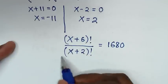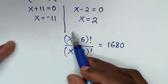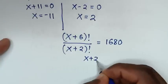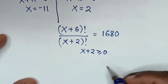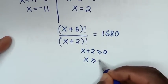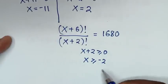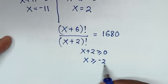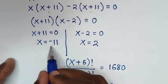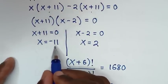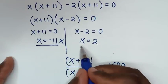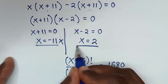For the factorial in the denominator to be valid, x+2 must be greater than or equal to 0, meaning x ≥ -2. Since x = -11 is less than -2, that solution is not valid. Therefore our only valid solution is x = 2.